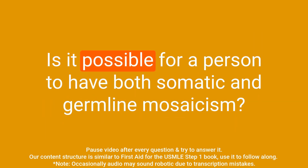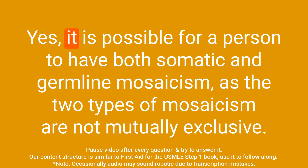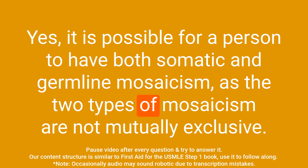Question: Is it possible for a person to have both somatic and germline mosaicism? Answer: Yes, it is possible for a person to have both somatic and germline mosaicism, as the two types of mosaicism are not mutually exclusive.